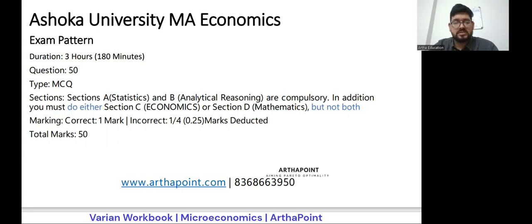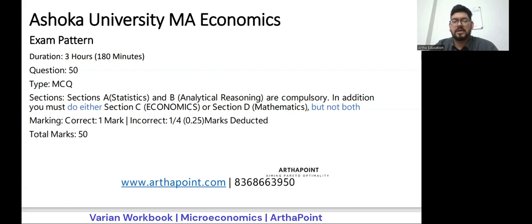They have namely Section A, B, C, and D. Section A is statistics — that's pretty much straightforward. Second is analytical reasoning. In most entrances, you will find a section consisting of comprehension, English, reasoning, and general awareness, but here they are not asking any English or elementary-level maths. They are completely dedicated towards analytical reasoning, so reasoning questions will be there. Sections A and B are both compulsory — that is, you will have to attempt both. But here comes the interesting part: you can attempt either Section C or Section D.